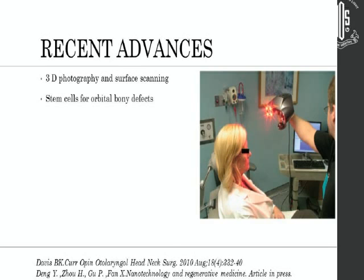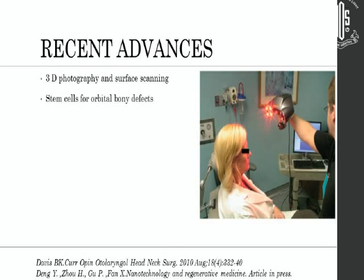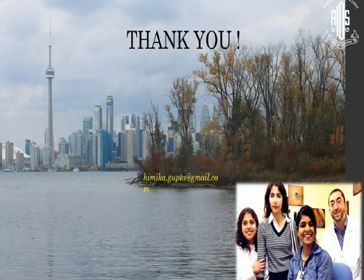Stem cells are a new development from an Asian group, though they've only been done in neurone models so far. To summarize: fitting a prosthesis is not enough — perfect cosmesis includes restoration of skin, eyebrow, eyelashes, and periocular soft tissue. You must try to symmetrize with the other eye, avoid undue attention to the artificial eye, and consider wise disguise when needed. Customized prostheses are the best way to go. Thank you.